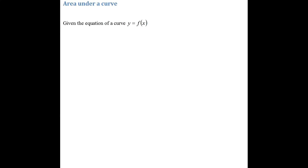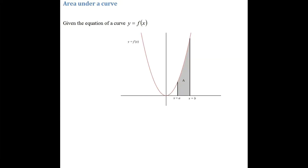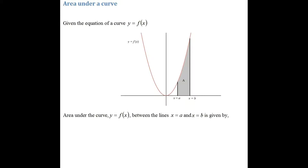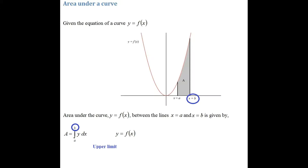So let's begin. If we're given the equation of the curve y equals f of x — I have a diagram here showing a curve y equals f of x — and if I have two lines with equations x equals a and x equals b, and we want to work out the area under the curve between those two lines, what we need to do is integrate. We integrate the equation of the curve y with respect to x, and the limits of integration will be x equals a as the lower limit, and x equals b as the upper limit.